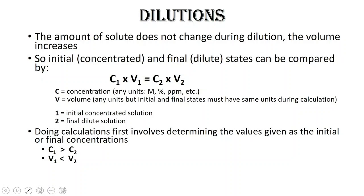One means the initial concentrated solution and two means the final dilute solution. When doing these calculations, it first involves determining the values given — is it initial or is it final? Your initial concentration is always going to be greater than your final concentration because you're diluting it. Your initial volume is always going to be smaller than your final volume because you're adding more liquid to dilute. So C1 is always greater than C2, and V1 is always less than V2. That will help you figure out what you're given in a problem.